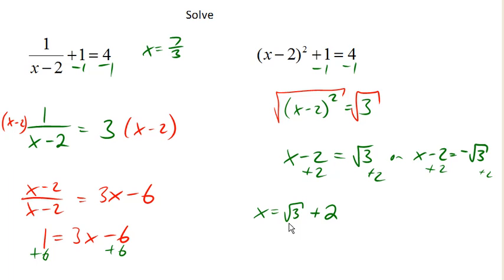And over here, x is negative root 3 plus 2. Again, the plus 2 is outside the square root. And there's our two solutions to that equation.